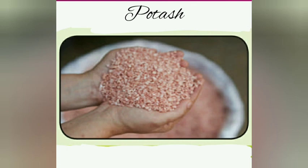Potash is one of the most useful minerals. 95% of potash is used for making fertilizers. If the soil does not have enough potassium, potash fertilizers are used to improve the quality of soil. The remaining 5% of potash is used in commercial and industrial products such as soap.